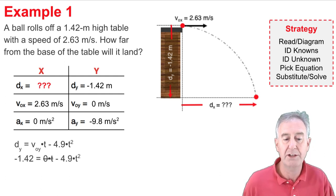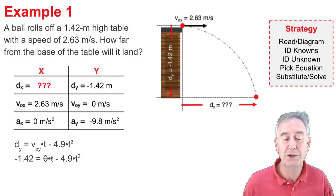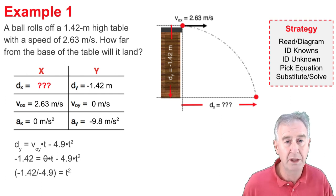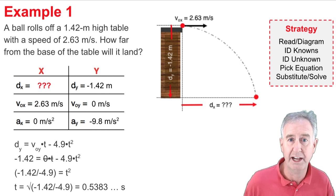and then I can put 0 in for voy. And that means the first term on the right side cancels out. 0 times time is 0. So, now I can divide both sides of the equation by 4.9, and I end up with negative 1.42 divided by negative 4.9 equal t squared. And I can take the square root of each side, and I get myself a time.